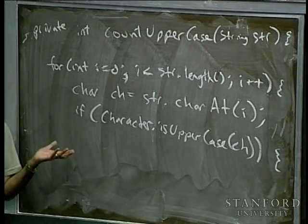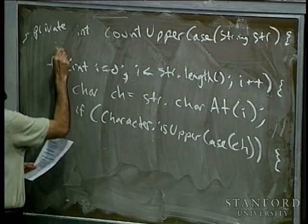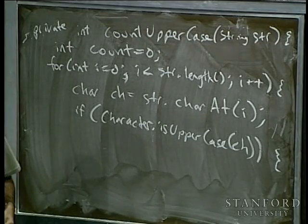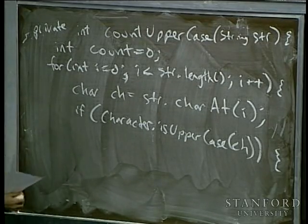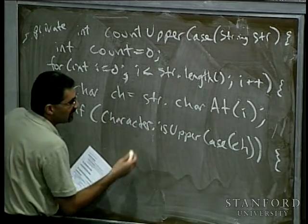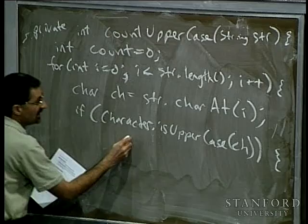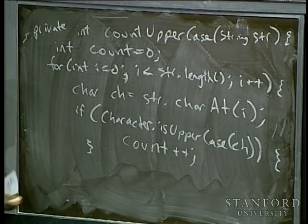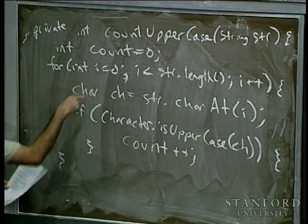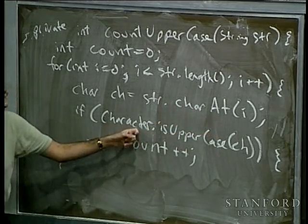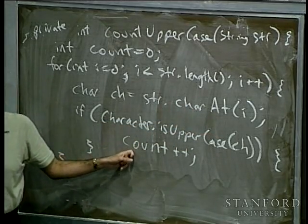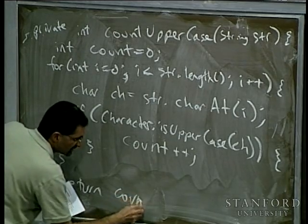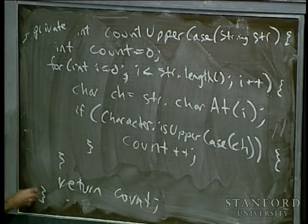If it is an uppercase character, we want to keep track of the count. So we'll have int count equals zero up here. If Character.isUpperCase(ch), then we increment count. Otherwise we don't increment the count because it's not an uppercase character. Then we end the for loop. This goes through all the characters of the string, checks each one, and at the end we return count, which tells us how many uppercase characters were actually in the string.